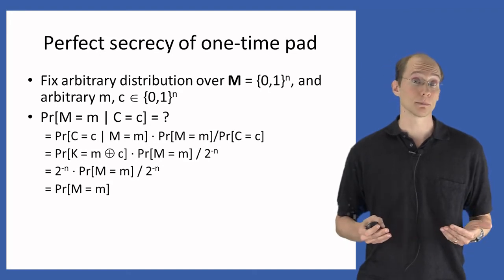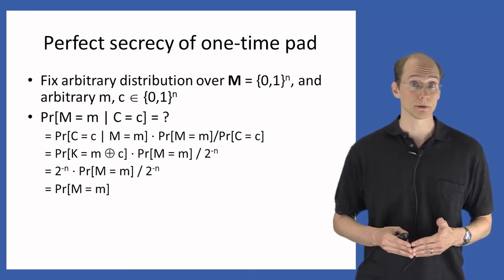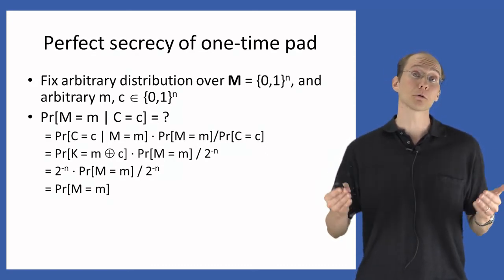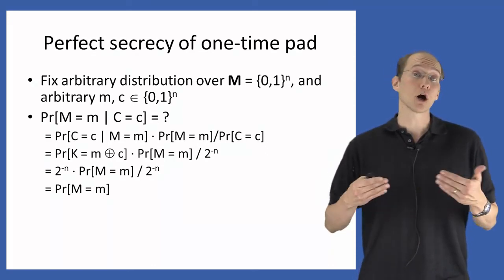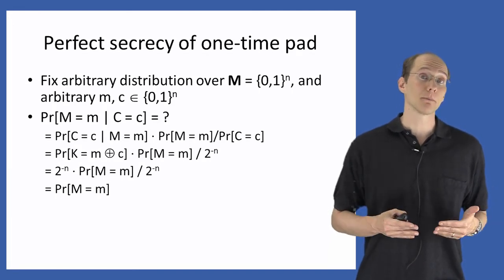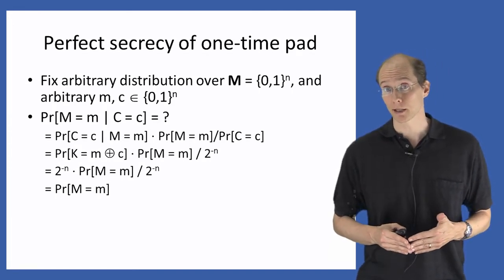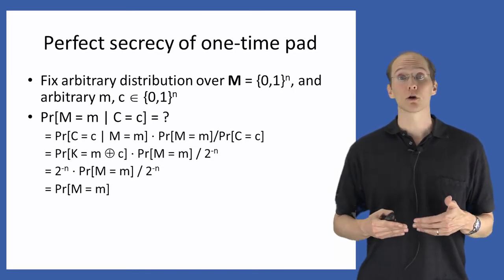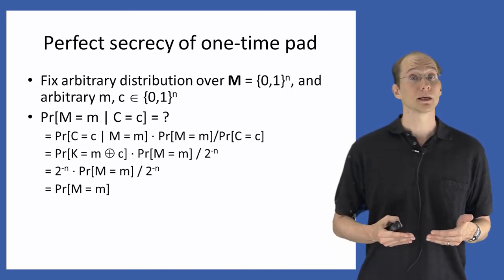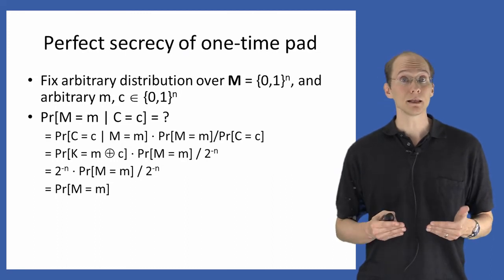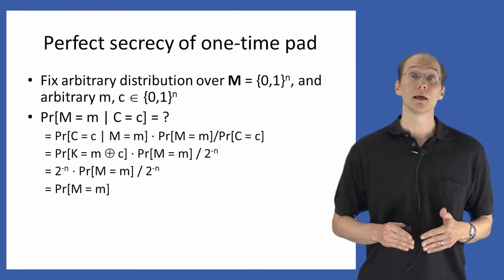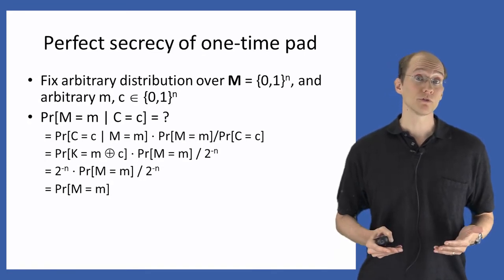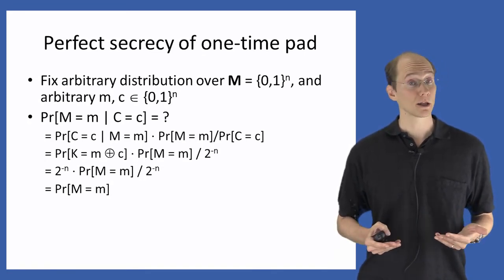That is the probability that the message equals little m. We're done: we've shown that for any distribution over the message space, any arbitrary message, and any arbitrary ciphertext, the probability that the message equals m conditioned on observing ciphertext c is exactly equal to the a priori probability that the message equals m. This completes the proof that the one-time pad achieves perfect secrecy.